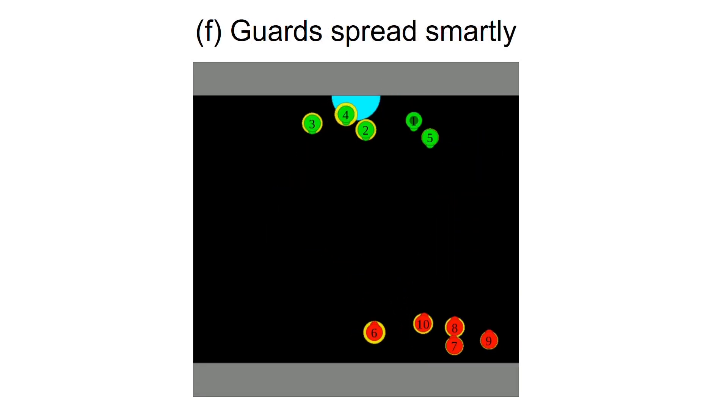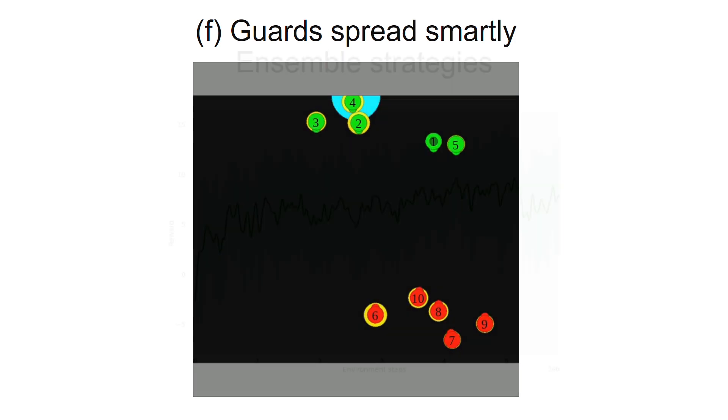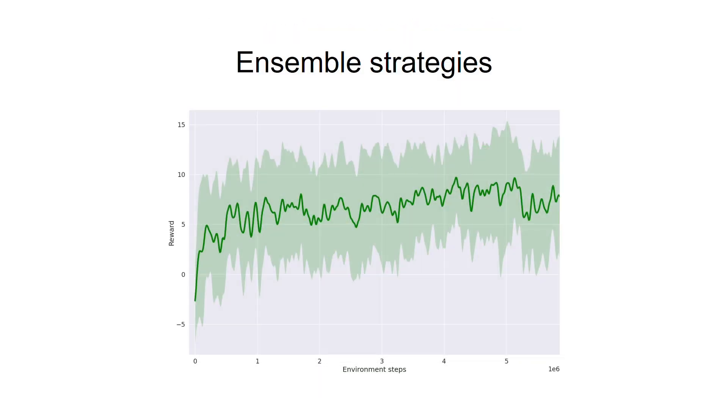Finally the guards learned to spread smartly covering a wider region and killing attackers before they can sneak in. If we want to get strong guards we can train a single guard policy against all the attacker strategies by randomly sampling one attacker strategy for each environment episode. In this case we see a steadily increasing reward curve for the guards.